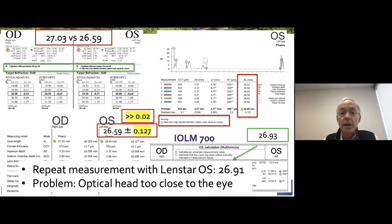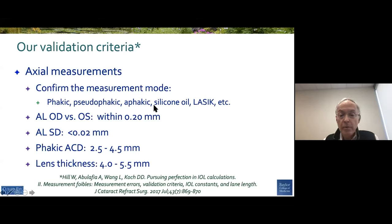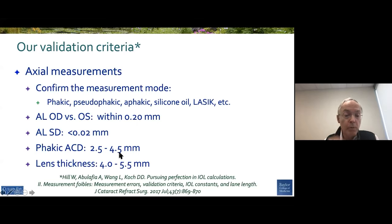There are lots of ways you can have errors, and you need to really be attentive to your raw data. We have validation criteria that we use: confirm the measurement mode for the biometer, axial lengths within 0.2, standard deviation 0.02, and then 2.5 to 4.5 for the ACD and 4 to 4.5 for lens thickness.